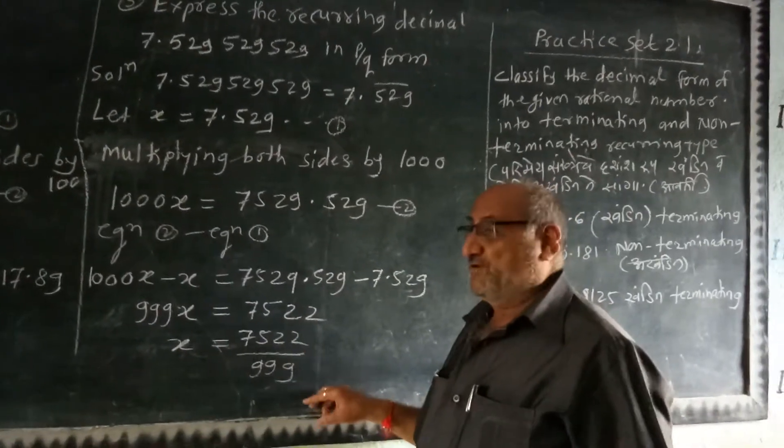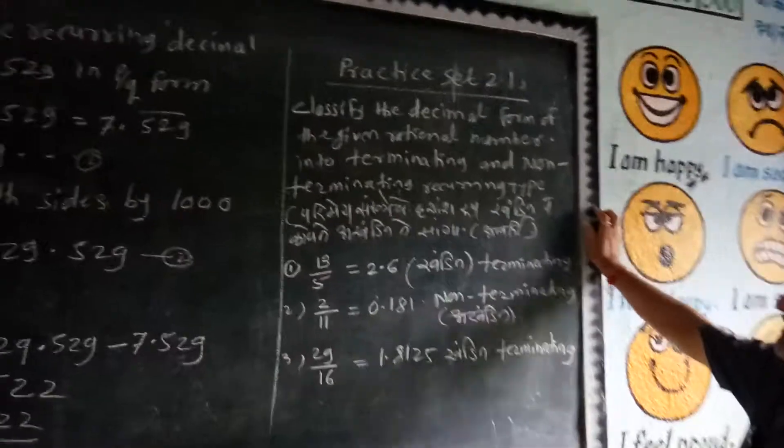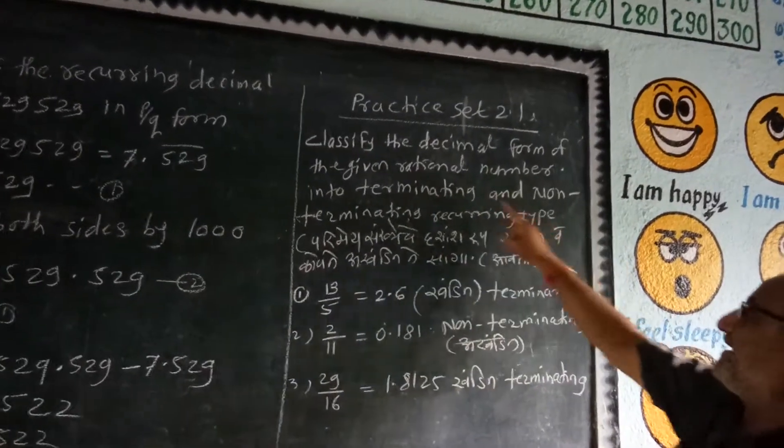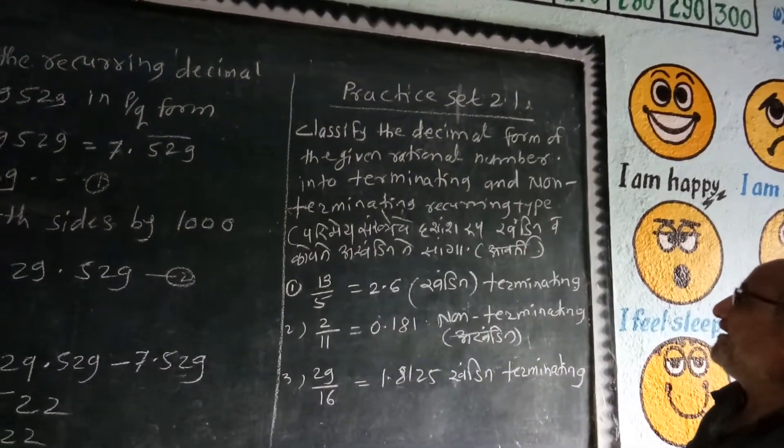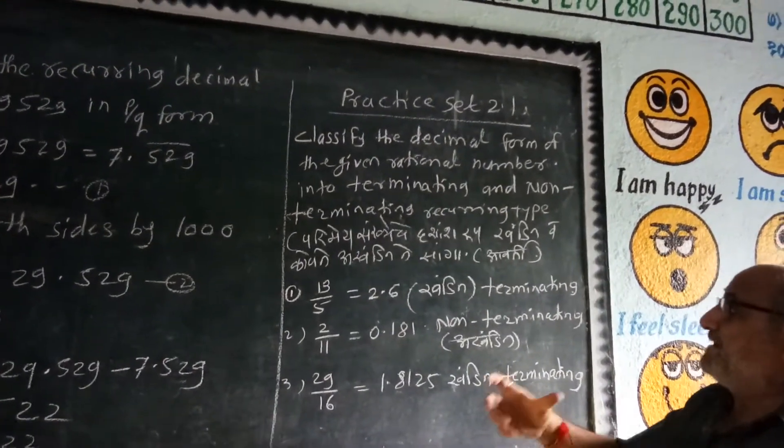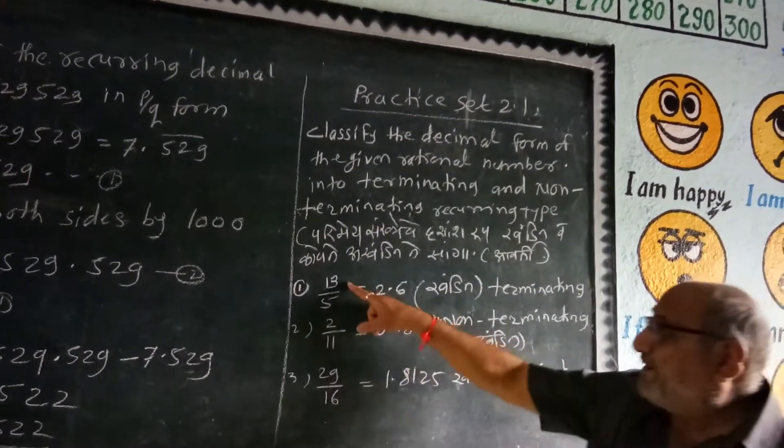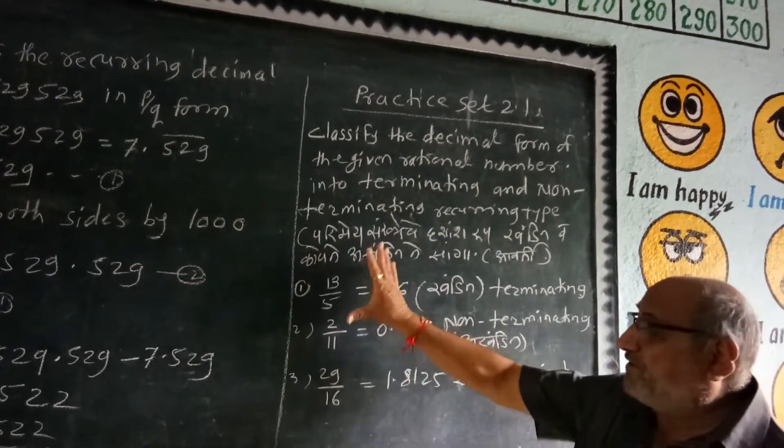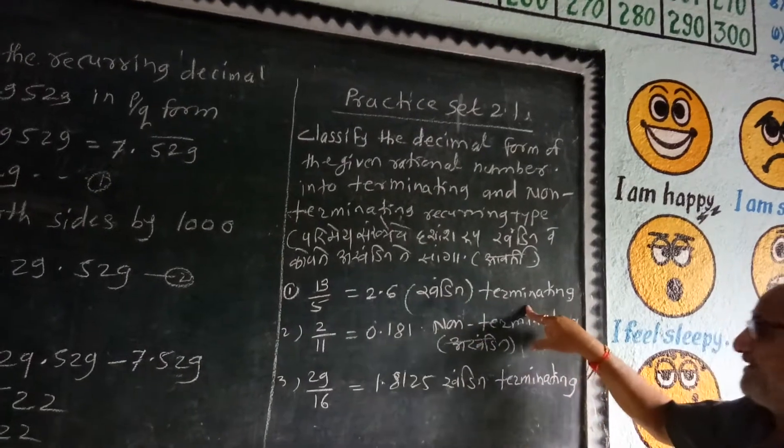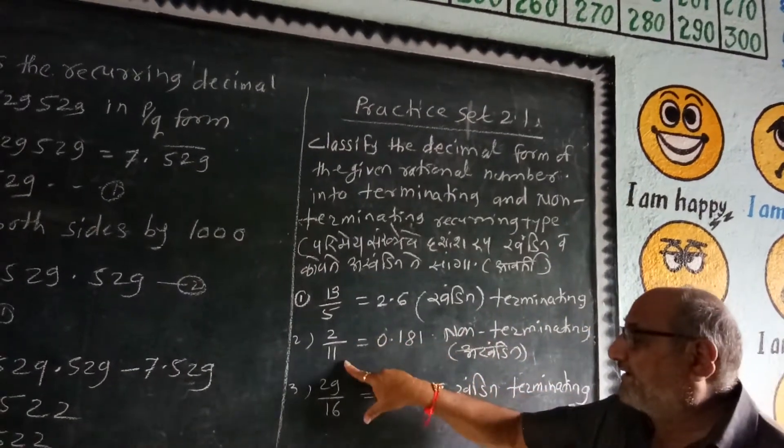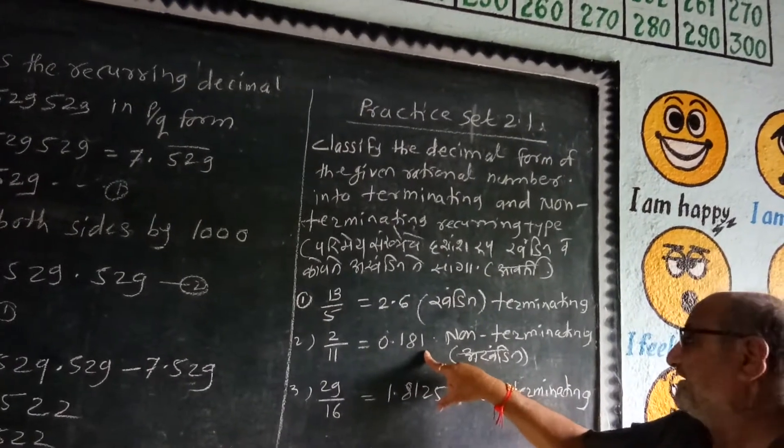So this is p/q form. This is classified as decimal form. Another example with 0.181... non-terminating decimal.